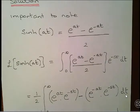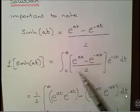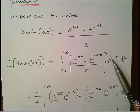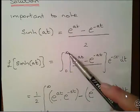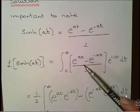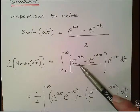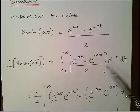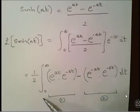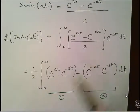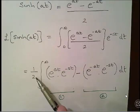Working from first principles, f(t) times e to the minus st, integrated from 0 to infinity, is the Laplace transform. Here, f(t) is e to the at minus e to the minus at, over 2. I'm going to break this up into two parts — taking out the half outside the integral and leaving it until the end.